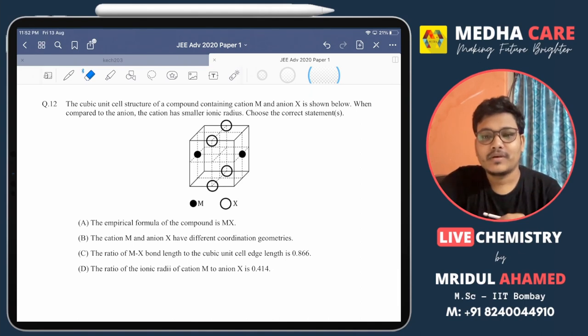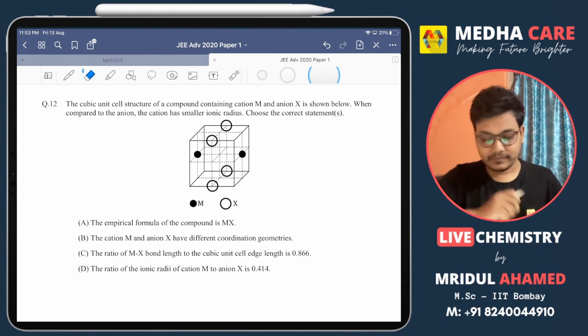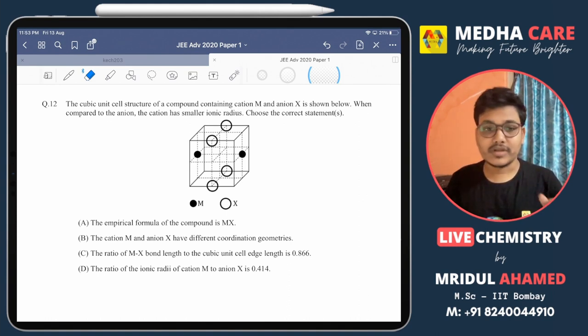Welcome everyone. In this video we will be talking about question number 12 of JEE Advanced 2020 Paper 1. This question is from solid state. In this question one cubic unit cell is given and four options are given. You have to choose the correct options.